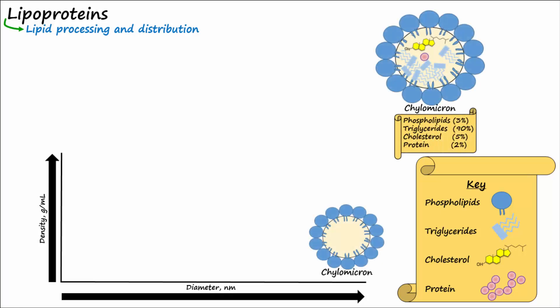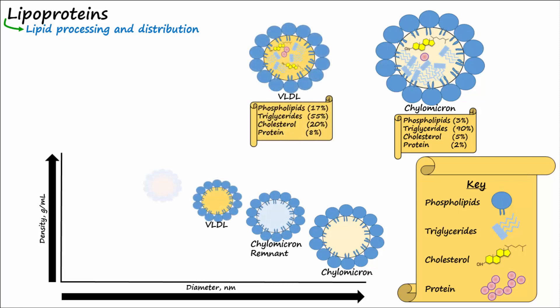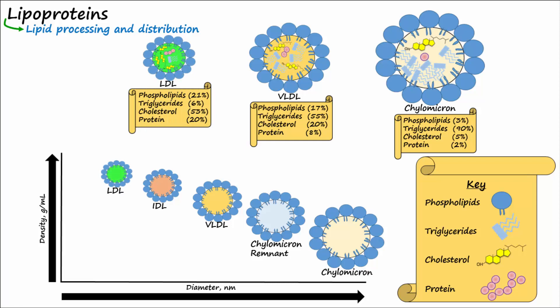the chylomicron is first, followed by the chylomicron remnant, VLDL, IDL, LDL, and lastly the smallest lipoprotein, HDL. Although HDL is the smallest, it is the most dense lipoprotein, while the chylomicron is the least dense.